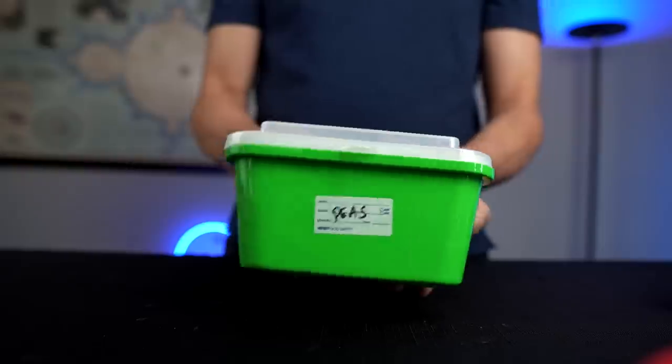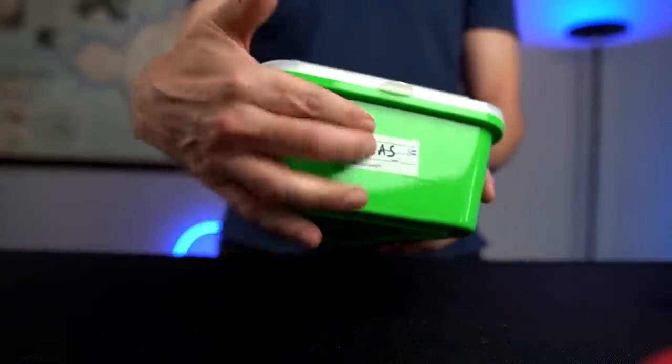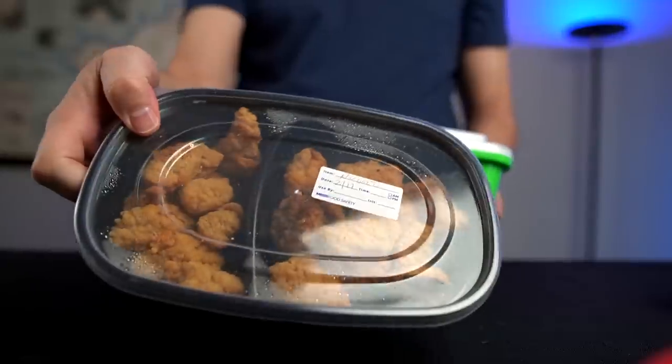Now before I rinse these off, I want to do a microwave test with a couple of these containers. I'm going to use my Rapid Veggie Steamer to see how it handles the steamy environment. And I'm going to also just put one in the microwave that comes right out of the fridge. We'll see if that affects these labels at all too.